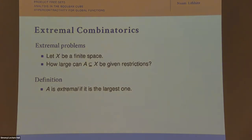To begin, let's discuss what extremal combinatorics is about. We're given a set of objects and want to understand how large a set can be, given some restrictions on the interrelations between the objects. The largest sets that satisfy the restrictions are called the extremal sets.